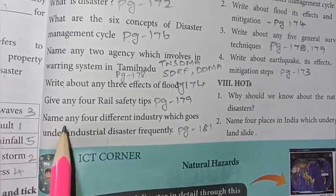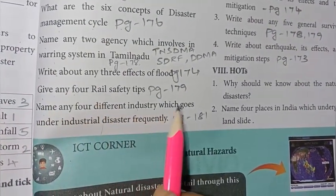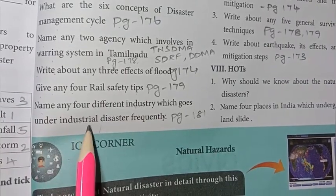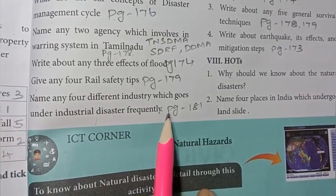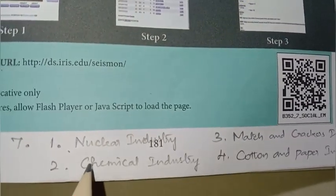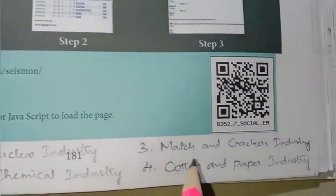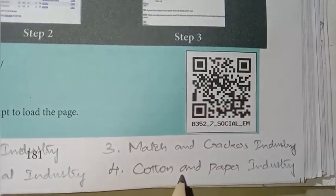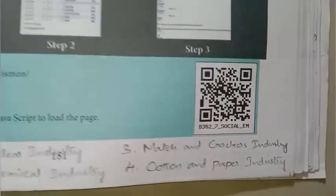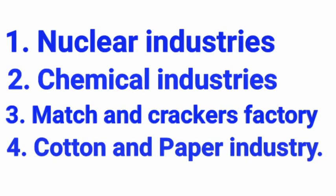Seventh question: name any four different industries which frequently undergo industrial disasters. Refer to page number 181. The industries are: nuclear industry, chemical industry, match and crackers industry, and cotton and paper industry.